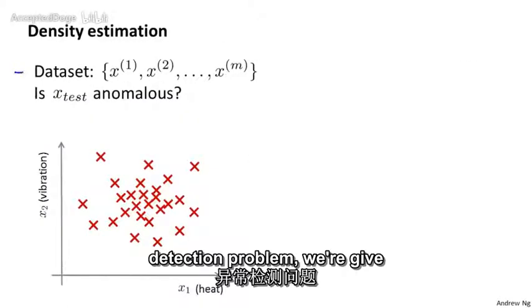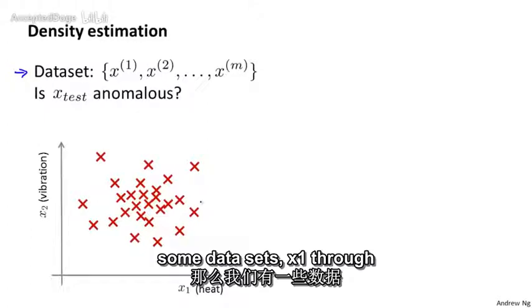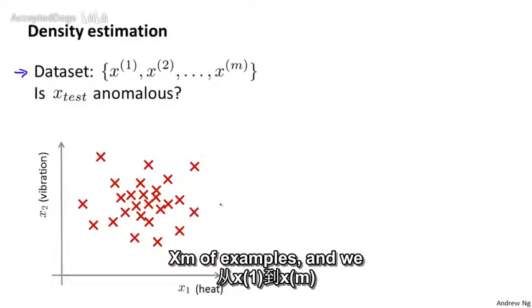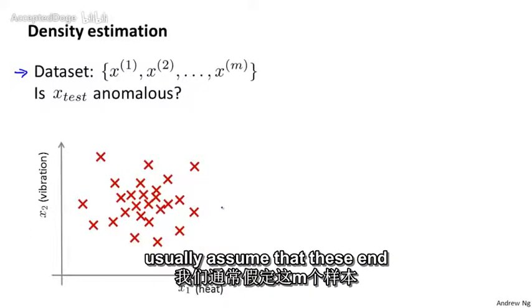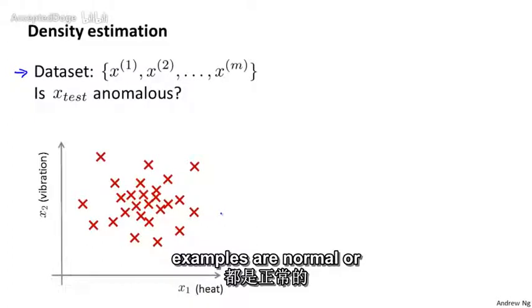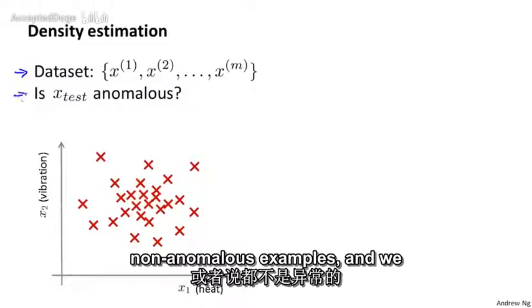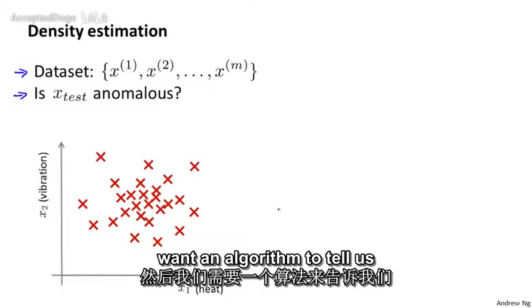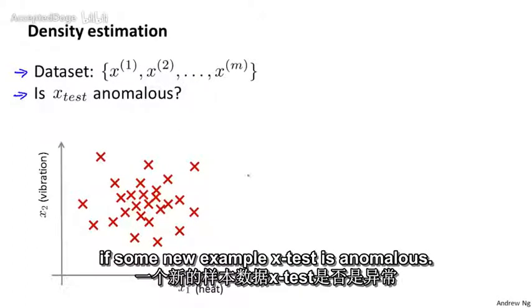More formally, in the anomaly detection problem, we're given some data sets, X1 through XM of examples. And we usually assume that these M examples are normal or non-anomalous examples. And we want an algorithm to tell us if some new example X test is anomalous.